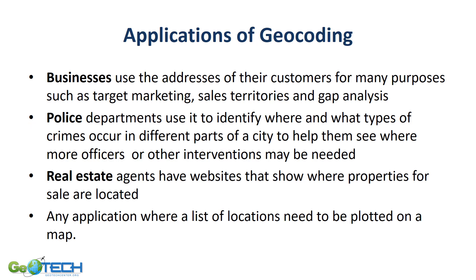There are plenty of applications that use geocoding. Businesses use it to target market customers — there are certain states that sell driver's license addresses, and businesses geocode those to decide where to send out their flyers. Police departments use crime mapping to pinpoint where crimes are and examine their patterns. And finally, real estate agents — if you look at Realtor.com, you type in a town where you're looking for a house and it gives you particular houses with those street addresses.